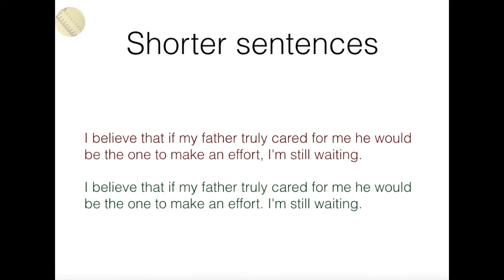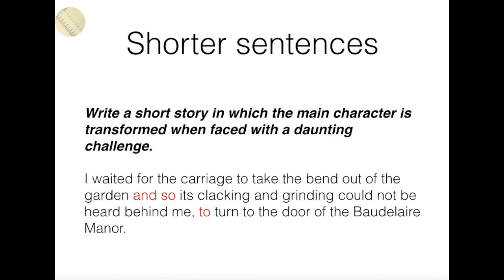The other thing to note is that the punctuation is all wrong in that kind of long sentence. When you're trying to write a complicated sentence, you really need to know exactly what you're doing or you'll just be wrong. So the next example is a short story set in a kind of Downton Abbey type era: 'I waited for the carriage to take the bend out of the garden and so its clacking and grinding would not be heard behind me to turn the door of the Baudelaire Manor.' It's not wrong — we know what's going on — but the syntax is messed up and the commas should be in different places. It would be much better to break the sentence up. If you're really trying to go for longer sentences, you just need to try really hard to get the syntax right.